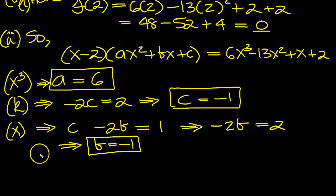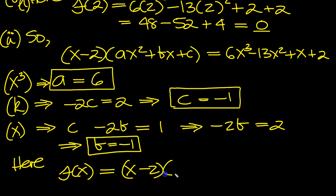So, what have we got then? Our f of x then, our cubic equation that we wrote was equal to x minus 2. A is 6, so it's 6x squared. Plus bx. b is minus 1. Plus c, which is minus 1.